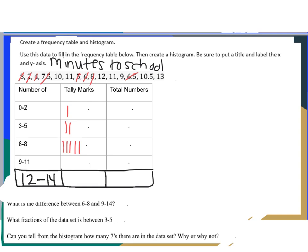Now we just add up the tallies. From zero to two we had 1; from three to five we had 2; from six to eight we had 5; from nine to eleven we had 5; and from twelve to fourteen we had 2.